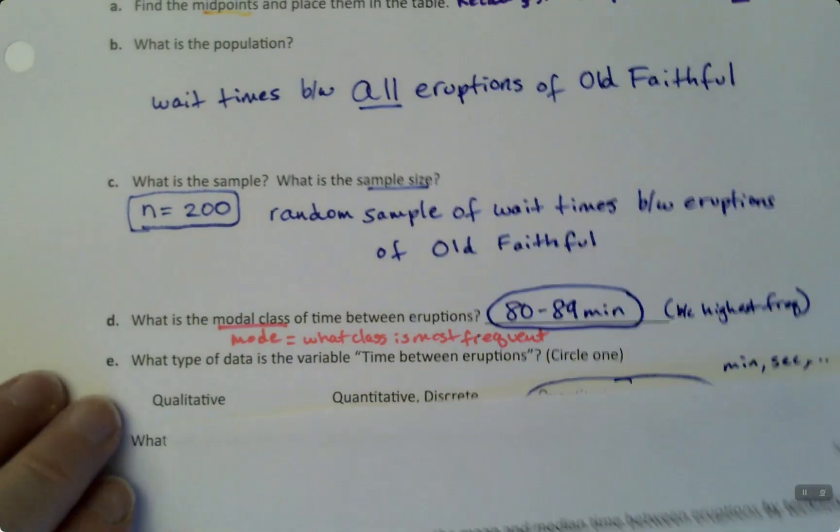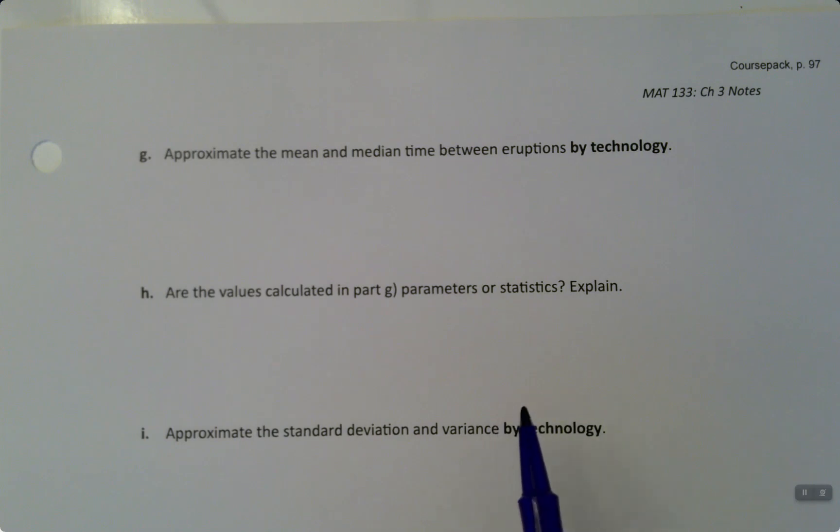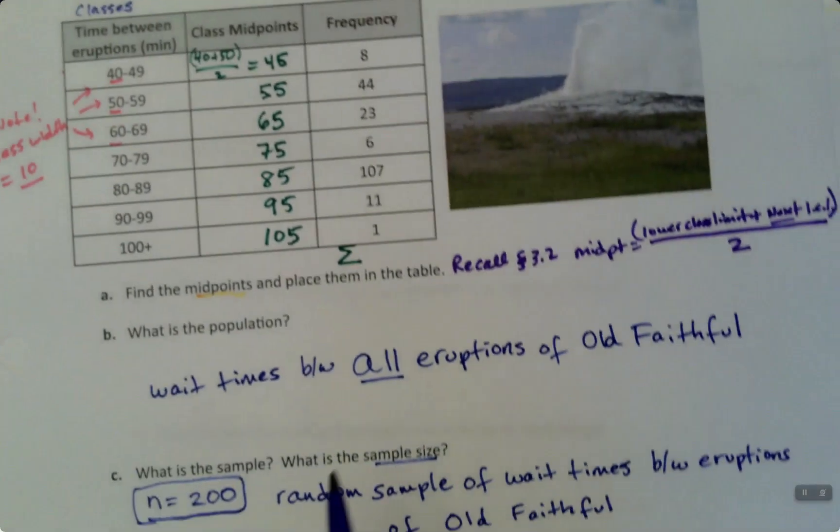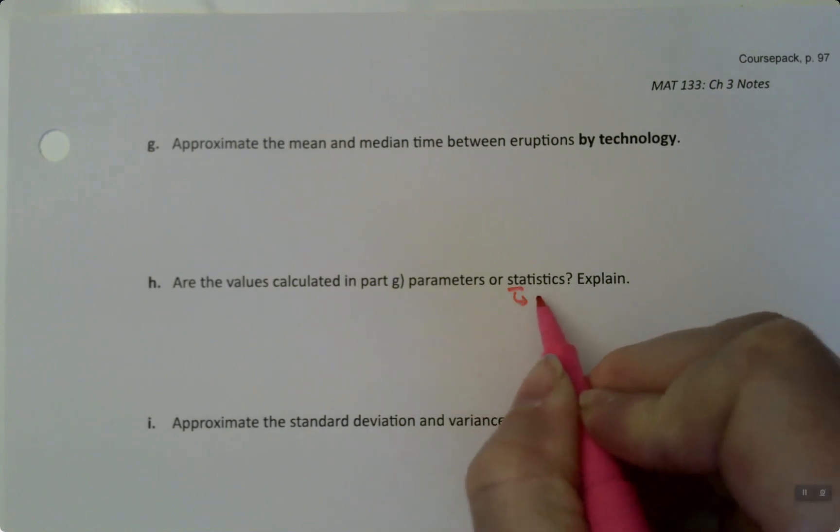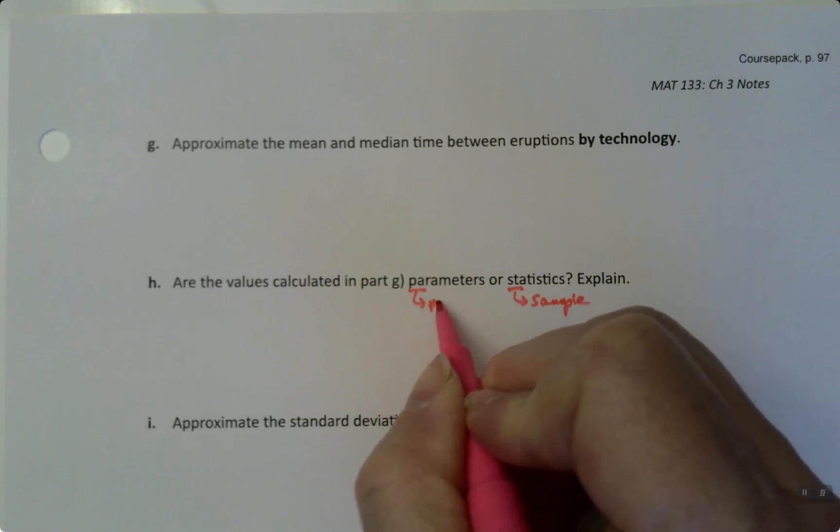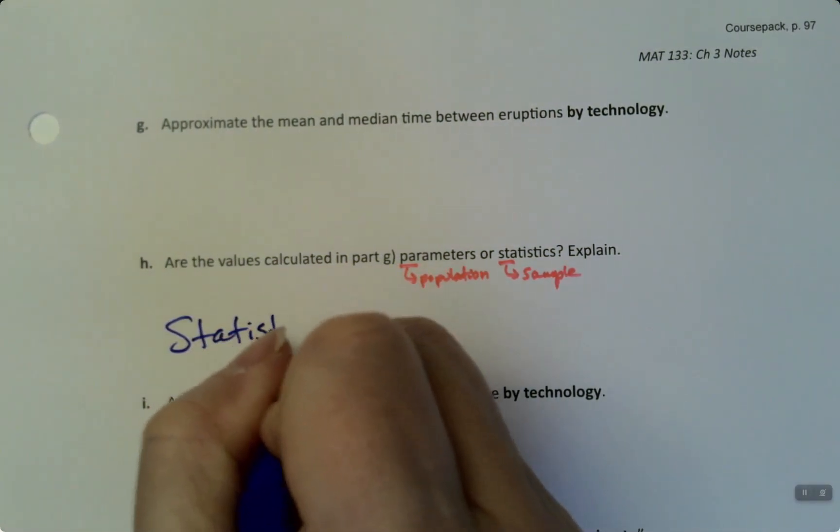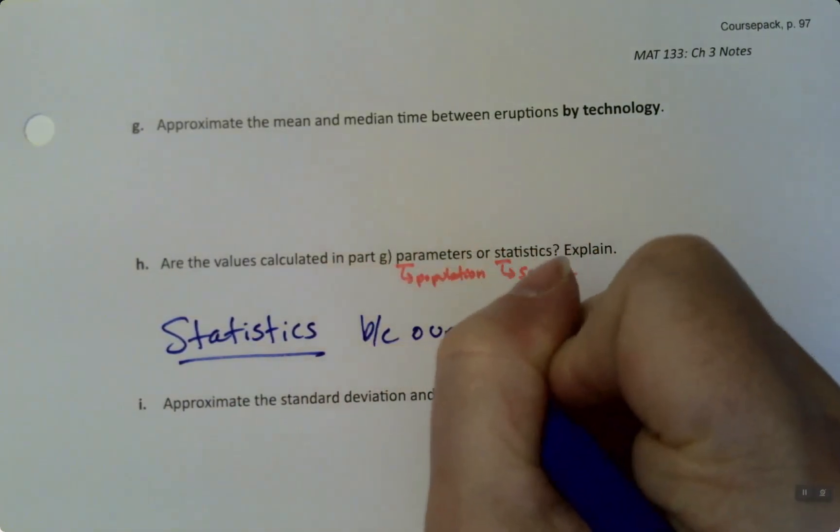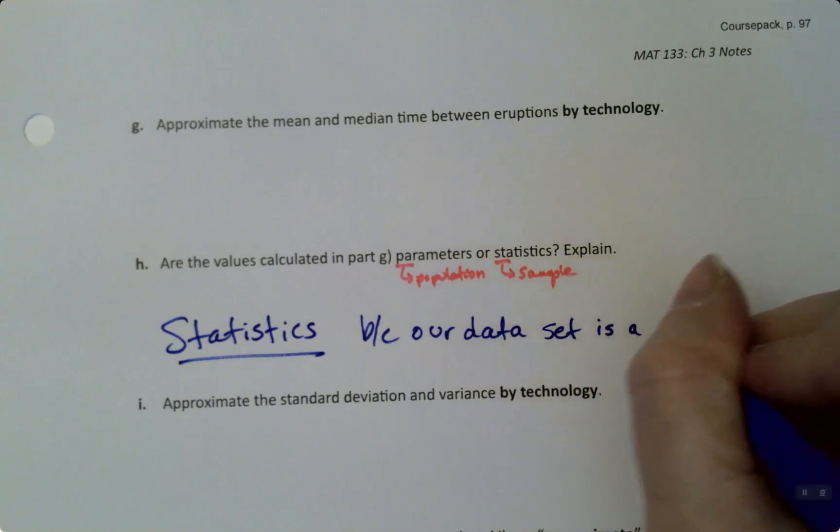So if you're sitting there for 71.2364 minutes, it has seconds and milliseconds and nanoseconds and so on. So it has decimal places. So this is very much quantitative continuous. There's minutes, seconds, and so on. You can definitely have decimal time. All right. What's the unit of measurement? The unit of measurement, units, that's from a science class perspective. It's right there. It's minutes. Now, what about the next page? Approximate the mean and median time between eruptions by technology. And actually, I'm going to skip ahead and see that we're going to approximate the standard deviation and variance by technology as well.